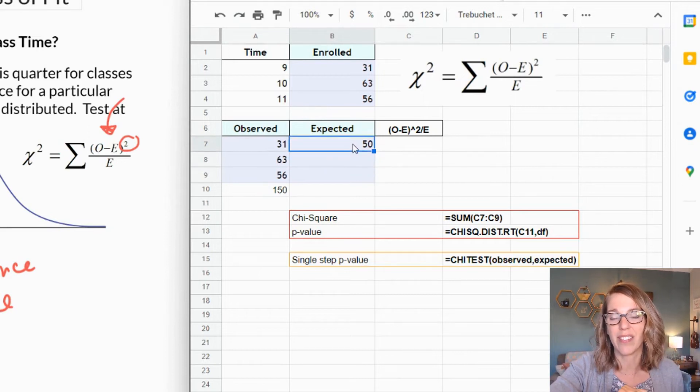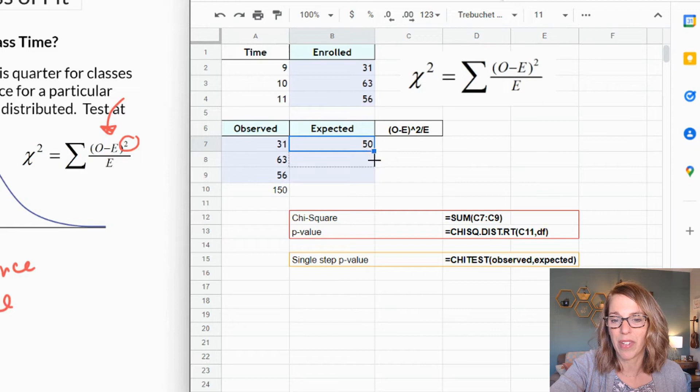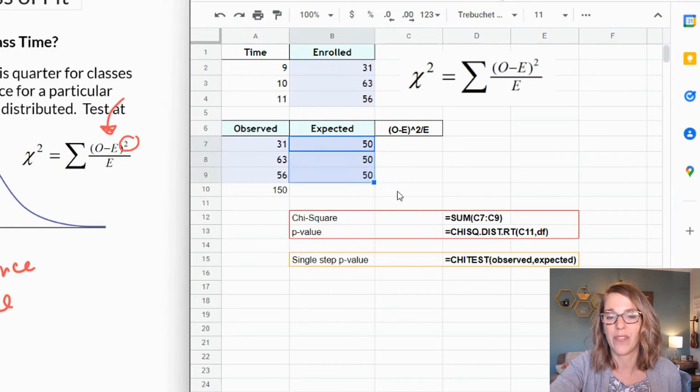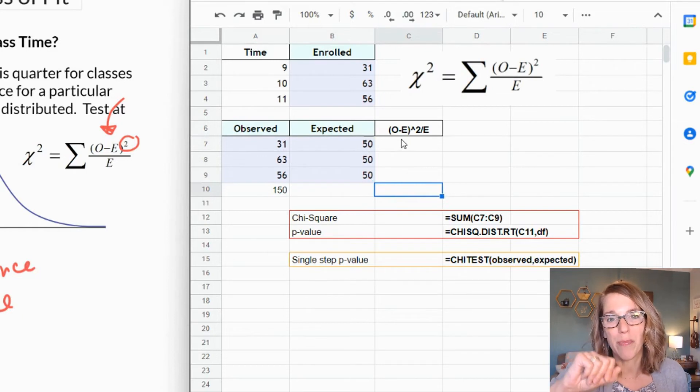I want to fill this all the way through. So I'm going to click on that value. Notice how when I click on it I get this little blue square in the bottom corner. I hover until I get that hashtag or that plus mark, and then I'm going to click, hold and drag and get 50 all the way through.